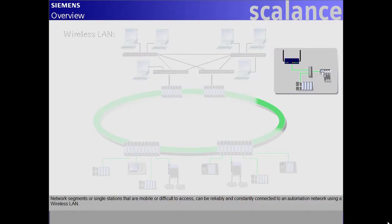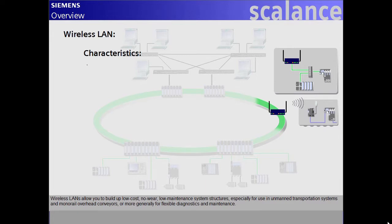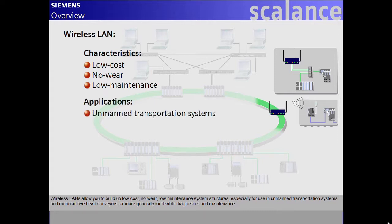Network segments or single stations that are mobile or difficult to access can be reliably and constantly connected to an automation network using a wireless LAN. Wireless LANs allow you to build up low-cost, no-wear, low-maintenance system structures,